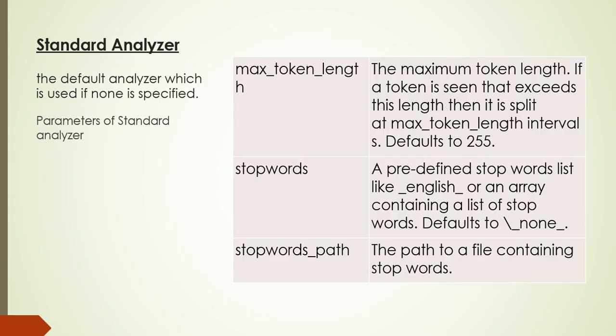The first analyzer is the standard analyzer. This is the default analyzer which is used if none is specified. If we are not specifying any analyzer in our index, then the standard analyzer is going to be performed on our queries at the backend. The parameters it accepts are max_token_length, stop_words, and stop_words_path.